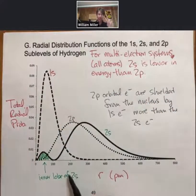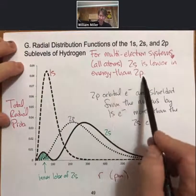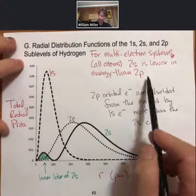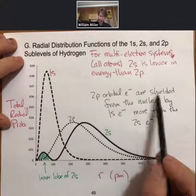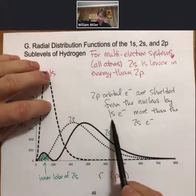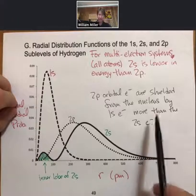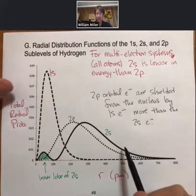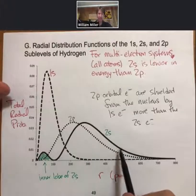So two things: first, 2s is lower in energy than 2p. Second, that is because the 2p orbital electrons are shielded from the nucleus by the 1s electrons more than the 2s electrons are. Always happy to answer any questions you have about this, but that's the take-home message from this plot.